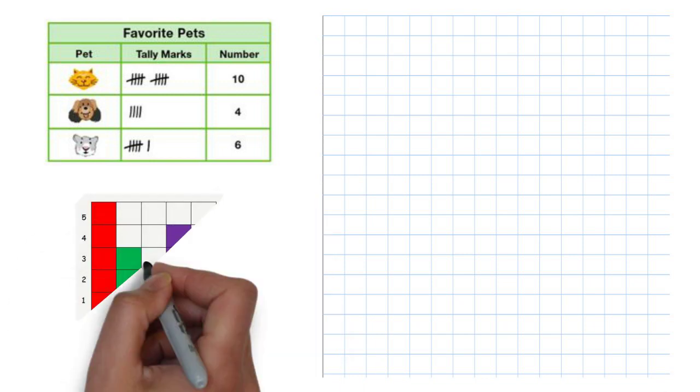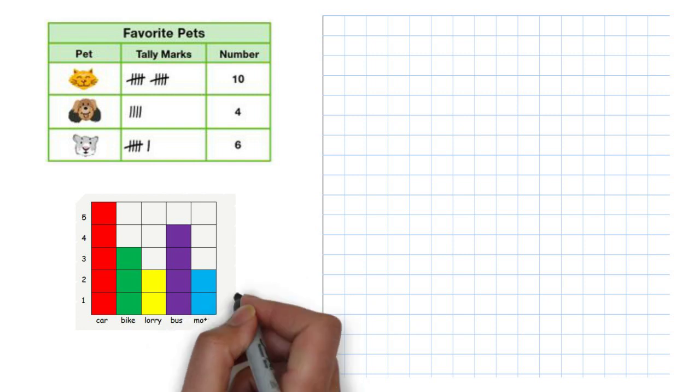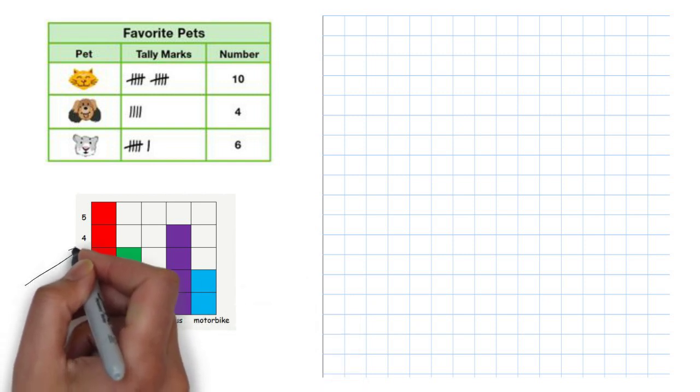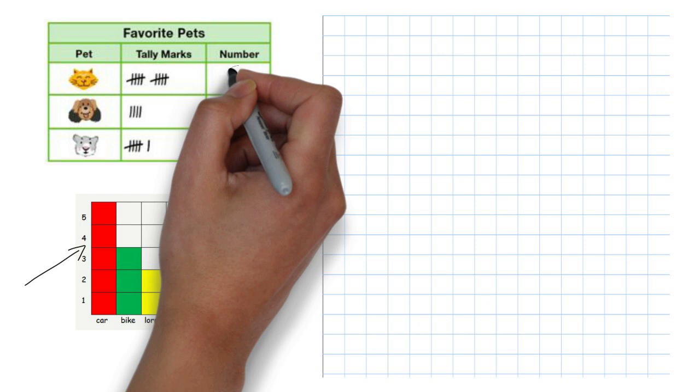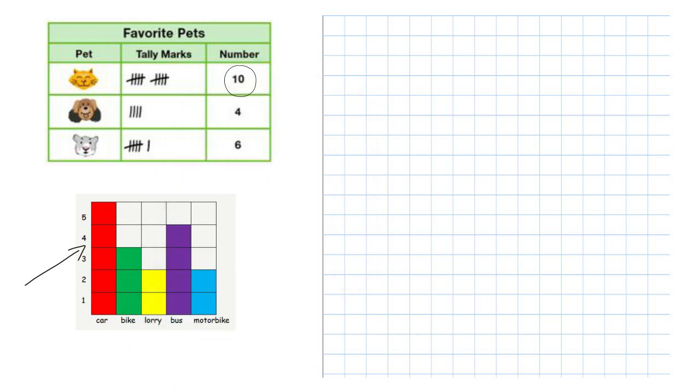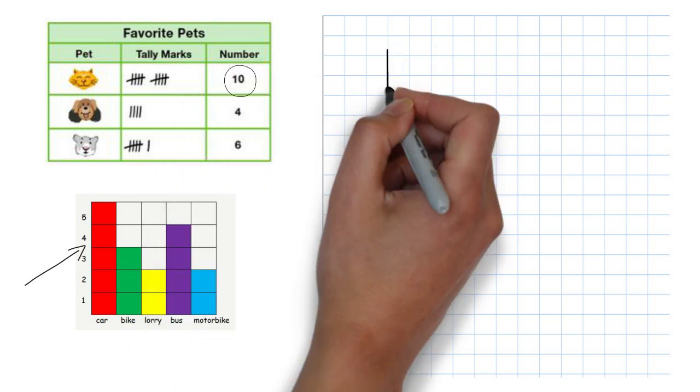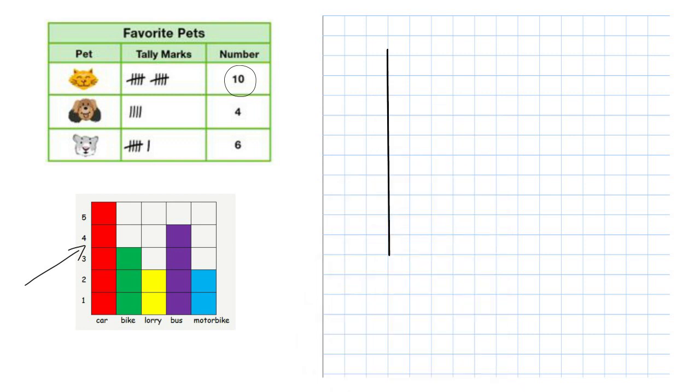Here's the block graph from the page before so you can see as an example. I'm going to draw the numbers down the side first to show the amount. To do this you need to see which number is the highest in your table. My largest number is 10 so I'm going to draw 10 lines down the side.